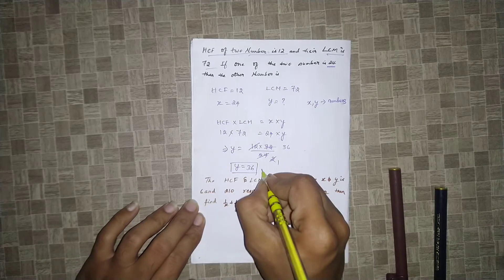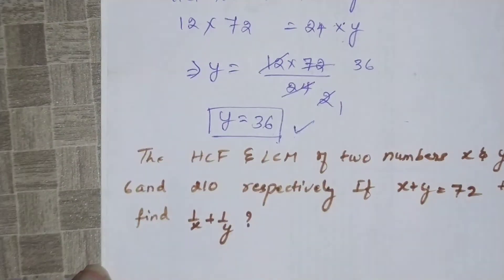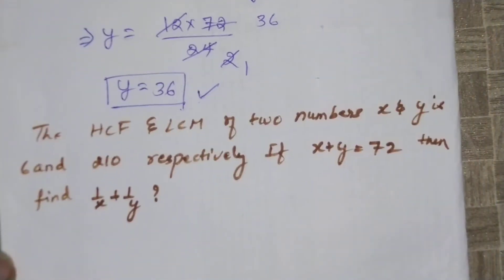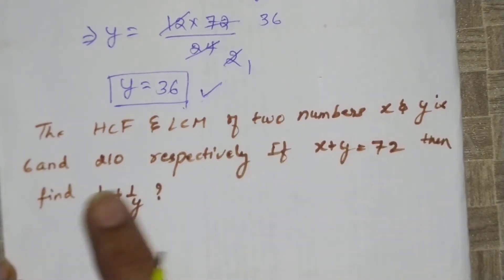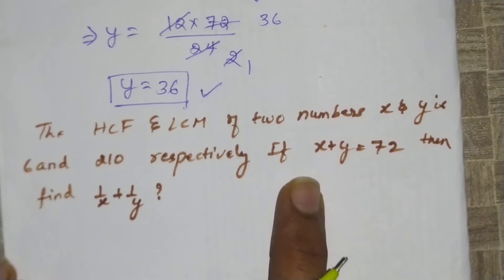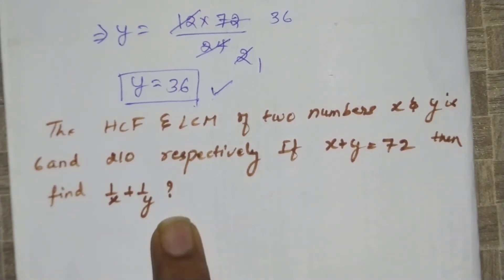Now we got the answer as 36. Now another question: HCF and LCM of two numbers x and y is 6 and 210 respectively. If x plus y equals 72, then find 1/x plus 1/y.